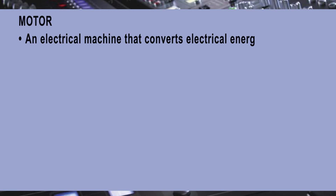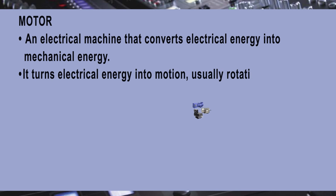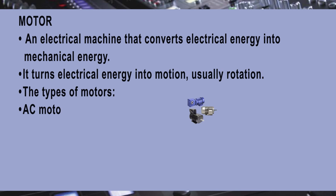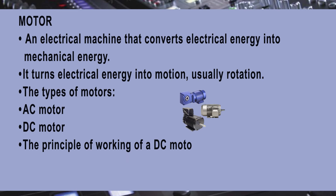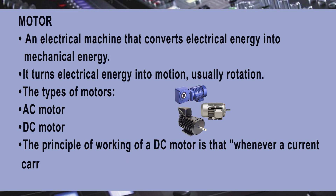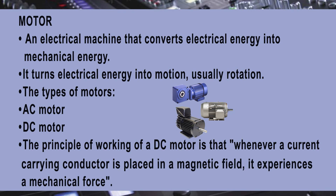Motor. An electrical machine that converts electrical energy into mechanical energy — it turns electrical energy into motion, usually rotation. The types of motors are AC motor and DC motor. The working principle of a DC motor is that whenever a current-carrying conductor is placed in a magnetic field, it experiences a mechanical force.